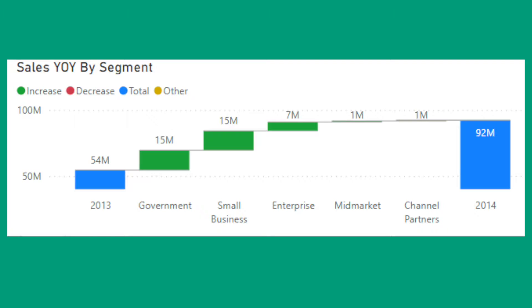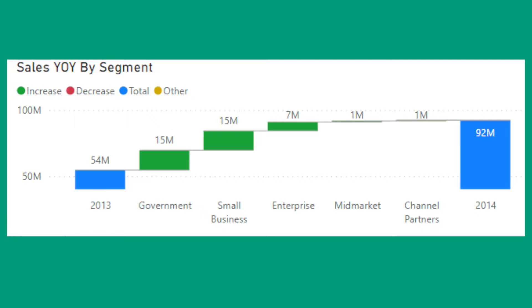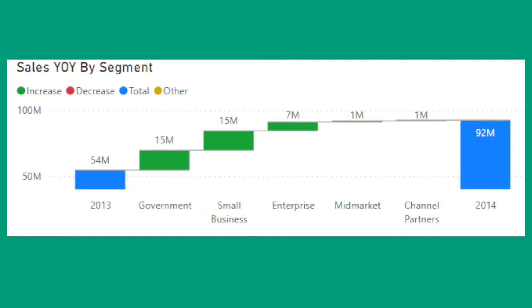Before I get started, some of you may be wondering: what is a waterfall chart? A waterfall chart is something that looks like this. This waterfall chart is showing sales year-on-year movement from year 2013 to 2014. The starting point is sales in year 2013 of $54 million. The ending point is sales in year 2014 of $92 million. In the middle are green blocks showing year-on-year growth from various segments, with the largest and most prominent ones coming from government and small business segments, both growing at $15 million per annum, followed by enterprise segments growing at $7 million per annum. A waterfall chart is super useful to explain movement clearly and succinctly.